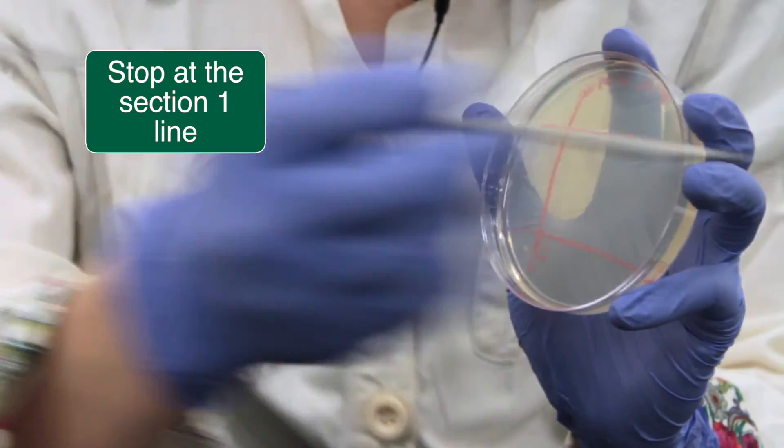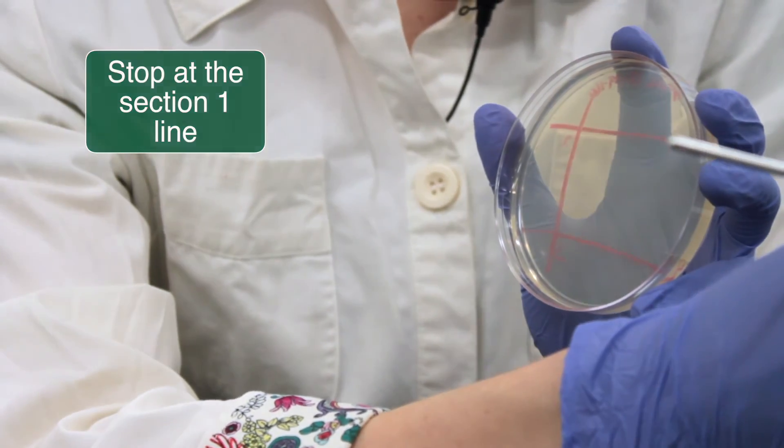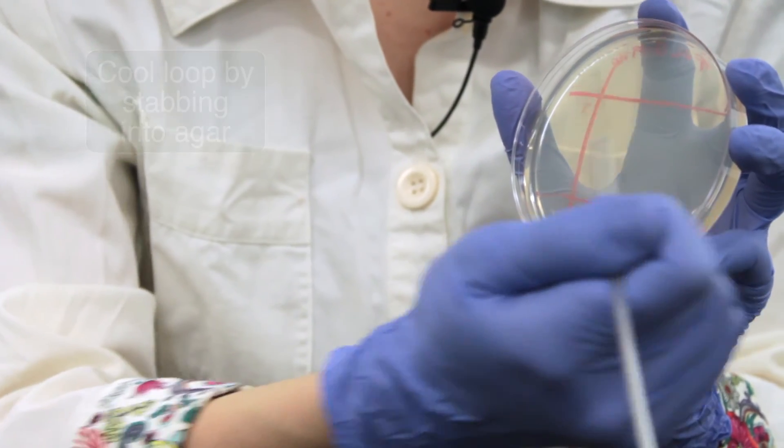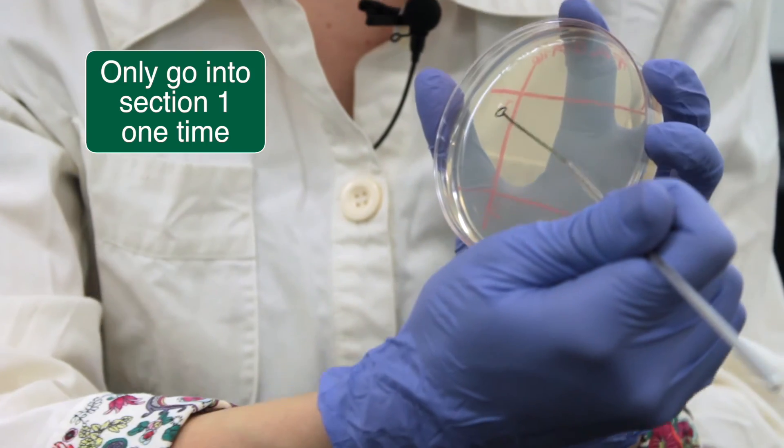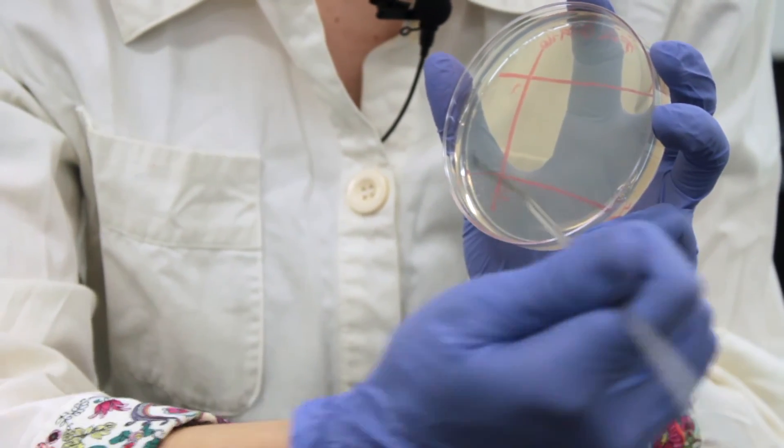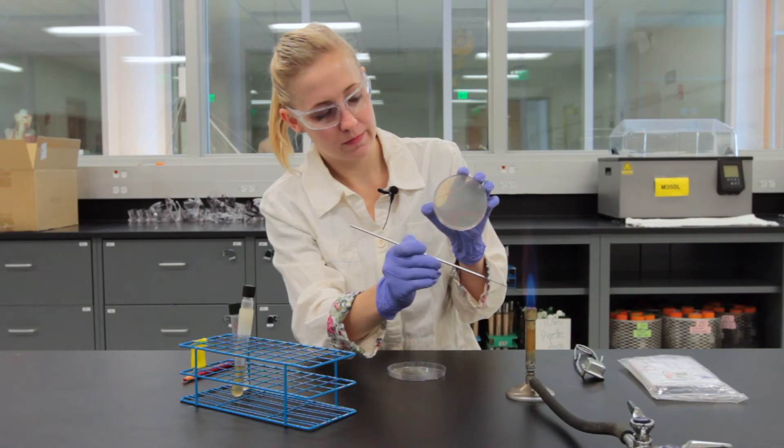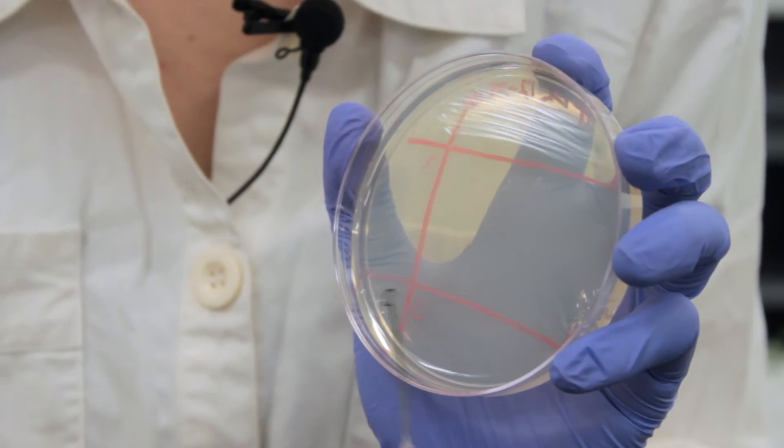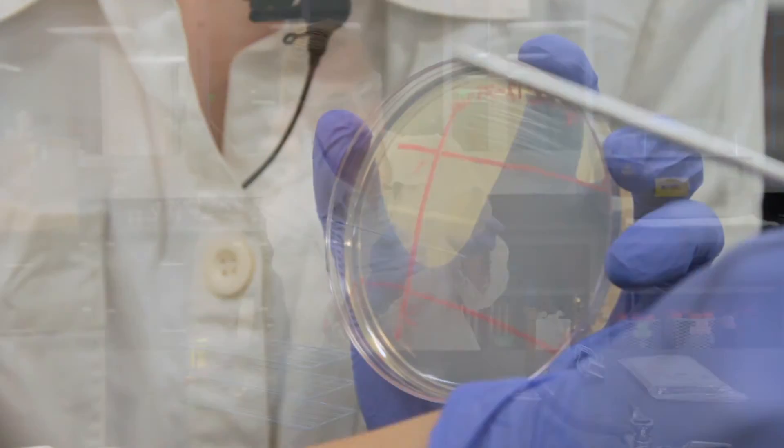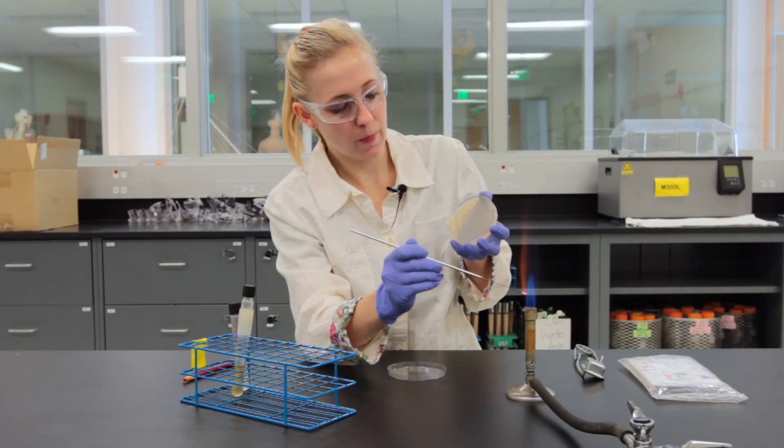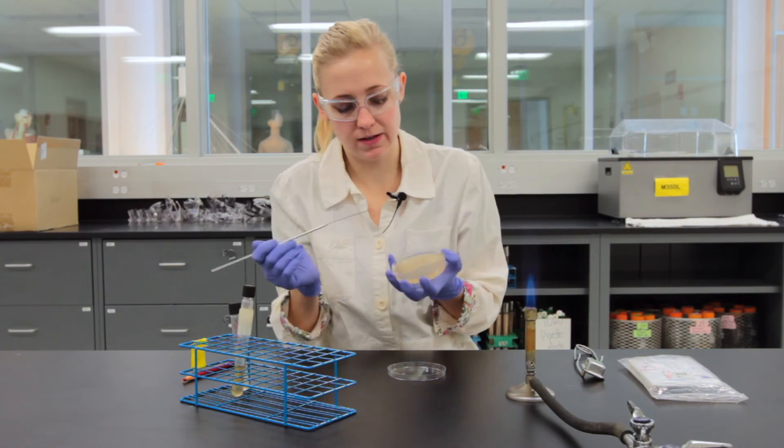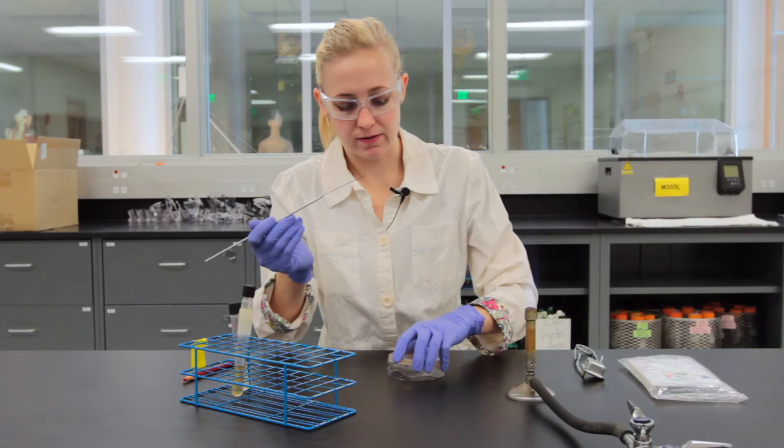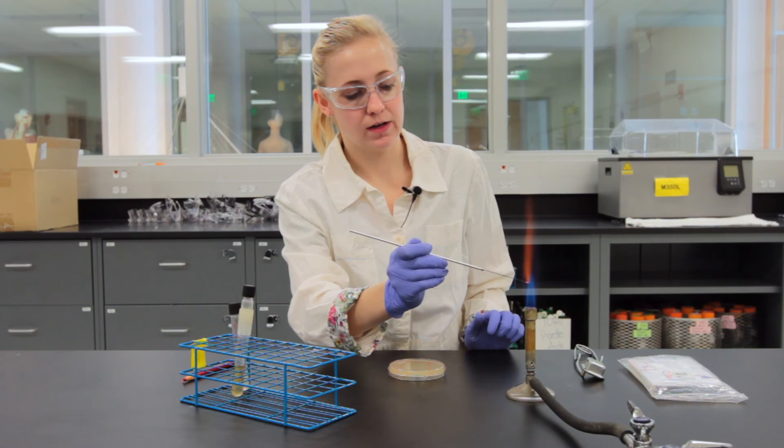And then I will flame my loop I'll cool it off and then I'll go from section one into section two just one time go back and forth flame cool from section two into section three down flame cool and then finally in from section three into section four I'll put the lid down sterilize my loop.